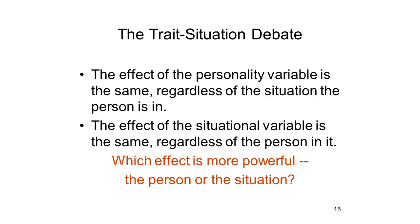For most of the 20th century, personality and social psychology proceeded largely independently of each other down these two quite different tracks — personality psychology studying the relationship between traits and behavior, and social psychology studying the influence of the situation on behavior. But in the 1960s and 1970s, there arose a vigorous trait-situation controversy or debate over which factors were more powerful predictors of behavior: internal traits or external situations. I'll have more to say about this debate later in this series of lectures.